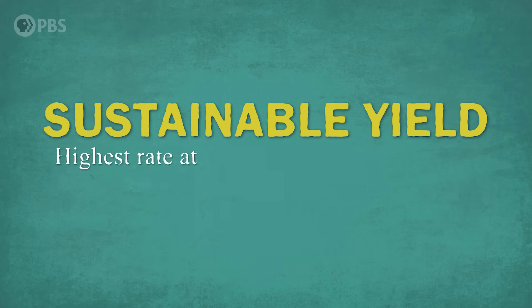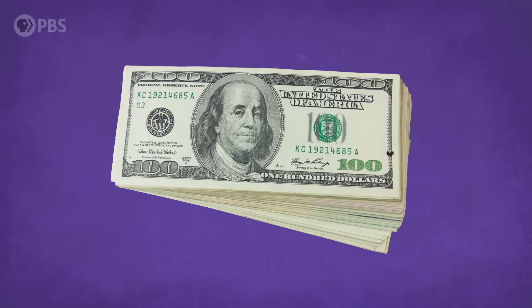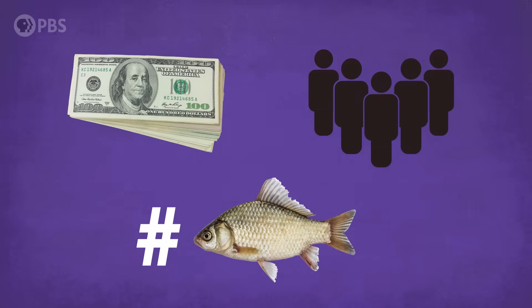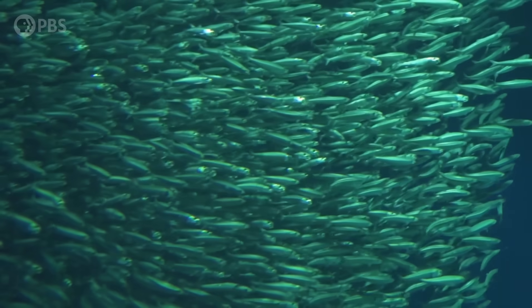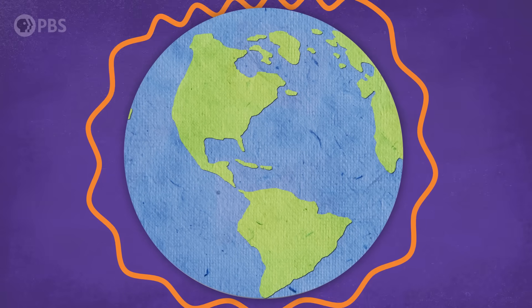The sustainable yield is the highest rate at which a renewable resource can be used forever without reducing its available supply—in other words, managing the resource not just for its current use, but also for how it's used by generations to come. This is a complicated task: it involves balancing the economic value of a resource, counting that resource (which in the case of fish is hard—the ocean is big), considering how land and ocean use will change in the future, and modeling how climate change will impact fish stocks. It's a hard question without simple answers, but the alternative—overfishing global fisheries until there are no fish left in the ocean—can't be the solution.